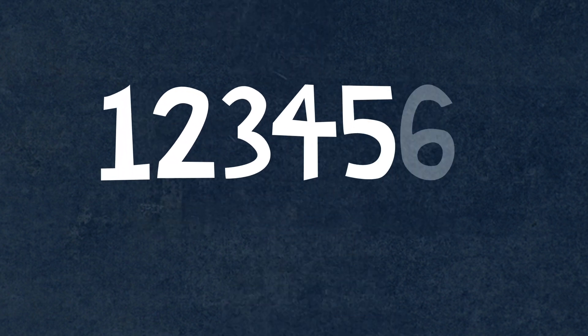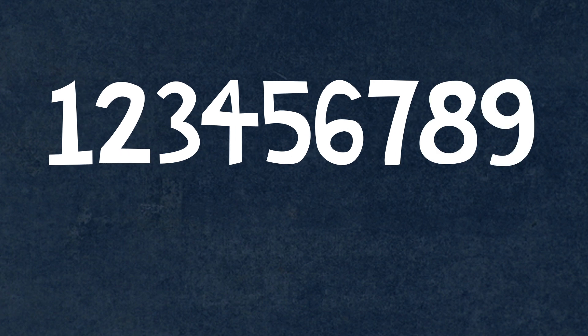We start counting at one, and we count up to nine. One, two, three, four, five, six, seven, eight, nine, and then we get to ten, and in order to write ten, we write a one and a zero.